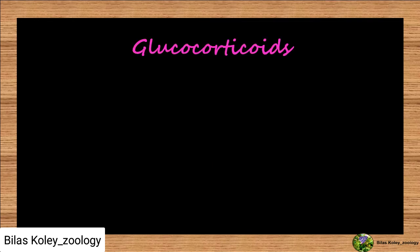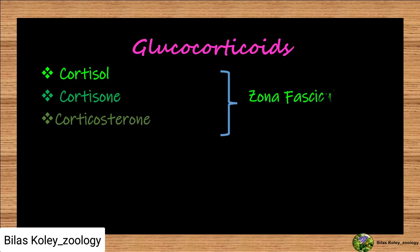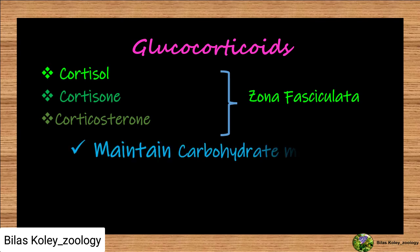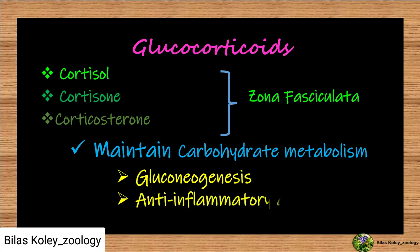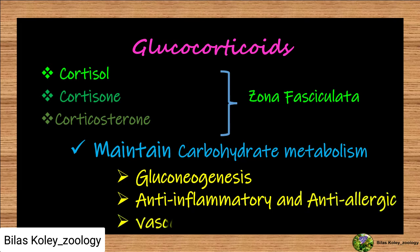Glucocorticoids include cortisone, corticosterone, and dehydrocorticosterone. These are secreted by the zona fasciculata of the adrenal cortex. They play an important role in carbohydrate metabolism by increasing the rate of gluconeogenesis and decreasing peripheral utilization of glucose. They also have anti-inflammatory and anti-allergy actions, and act as vasoconstrictors in cases of excessive bleeding to help maintain blood pressure.